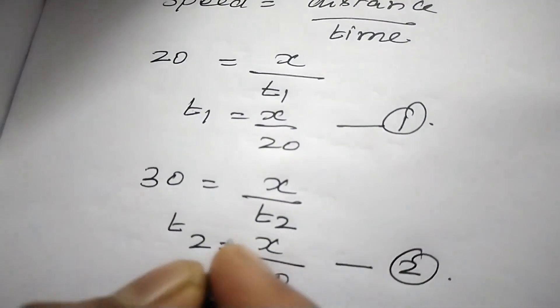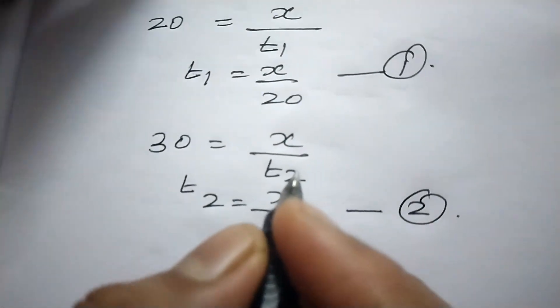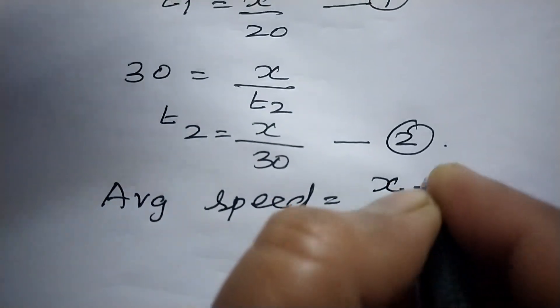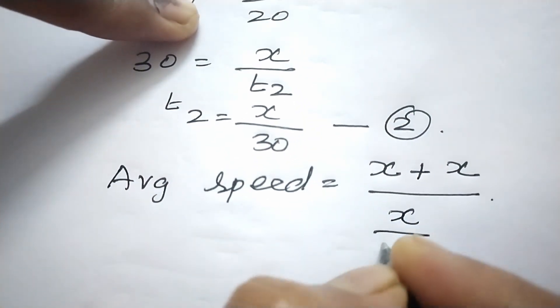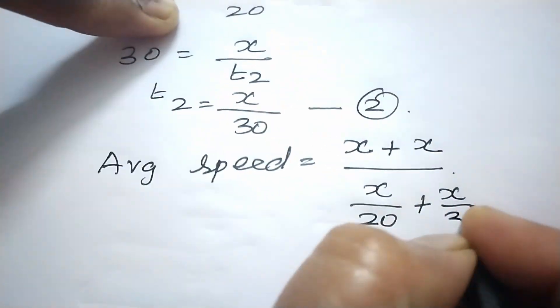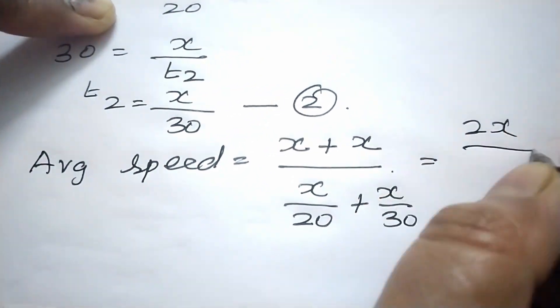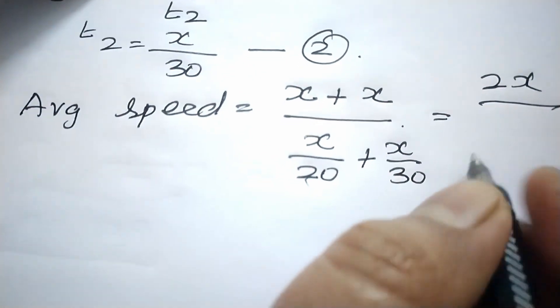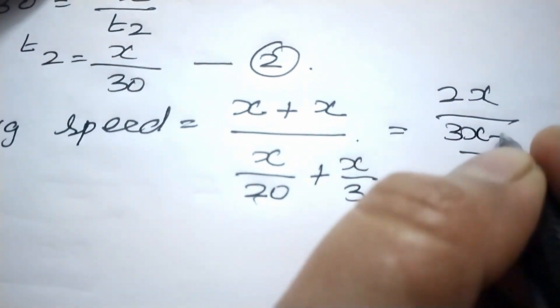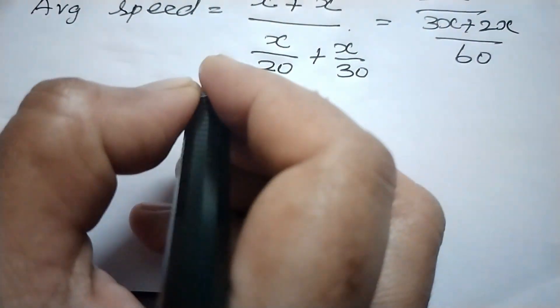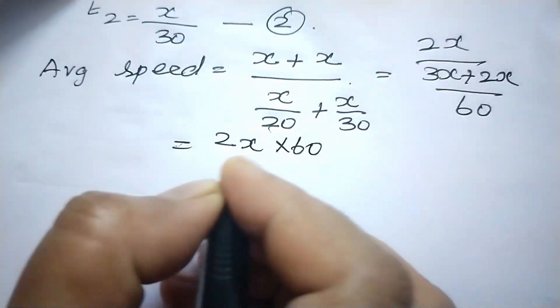Now we calculate the average speed. Average speed equals total distance divided by total time. Going to school the distance is x, and returning home it is also x, so total distance is x + x = 2x. Total time is t1 + t2 = x/20 + x/30. The LCM of 20 and 30 is 60, so the denominator becomes 3x + 2x = 5x over 60.